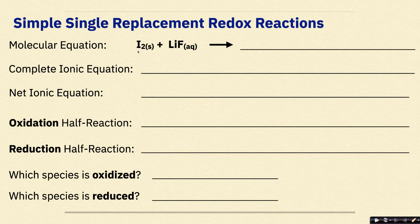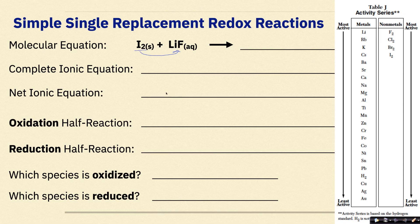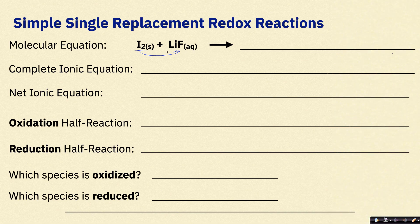Can I₂ come in and replace F₂? No — iodine is much farther down in Group 17, therefore much less reactive. It cannot replace F₂. So this reaction is not going to happen. Because this reaction will not occur, we just put lines through all of it to acknowledge that this reaction will not take place.